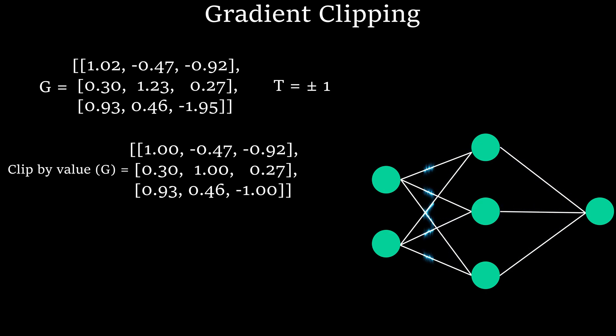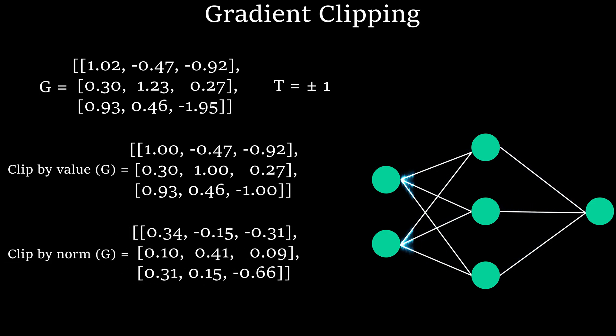So to fix this up, instead of clipping those values which are beyond threshold, just scale it between plus minus defined values, like in this case, plus minus 1. In this way, the direction of gradient won't change and this method is called ClipByNorm.